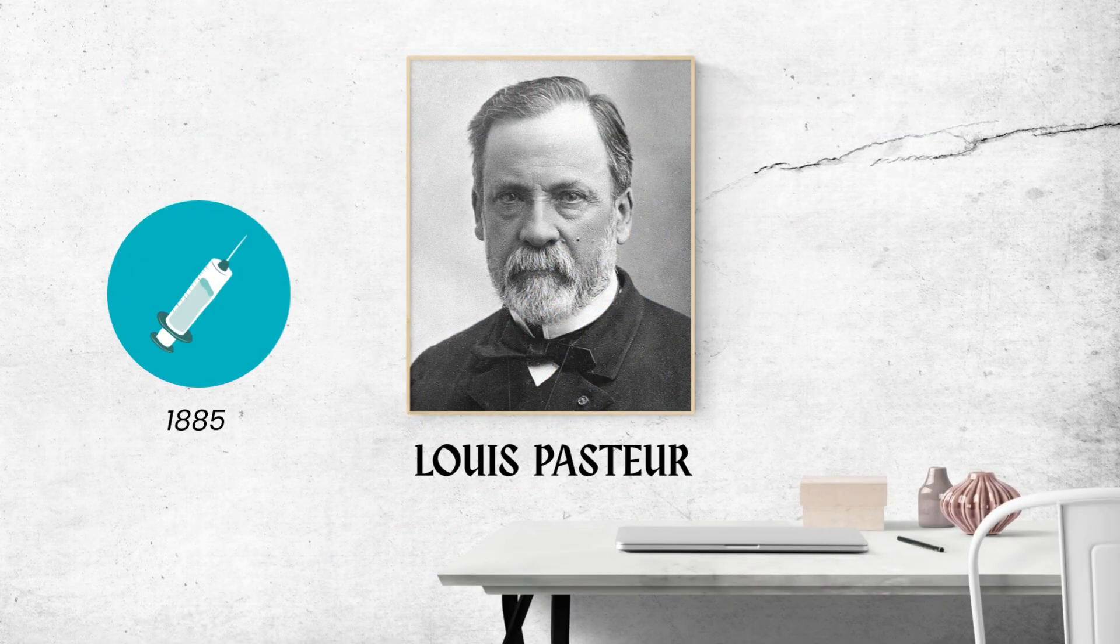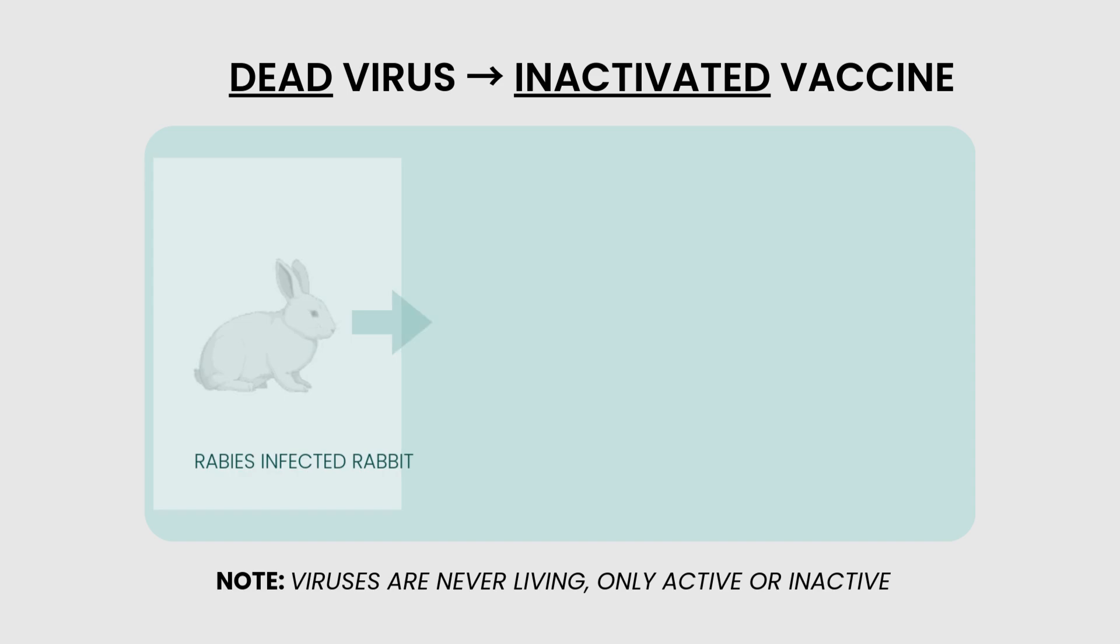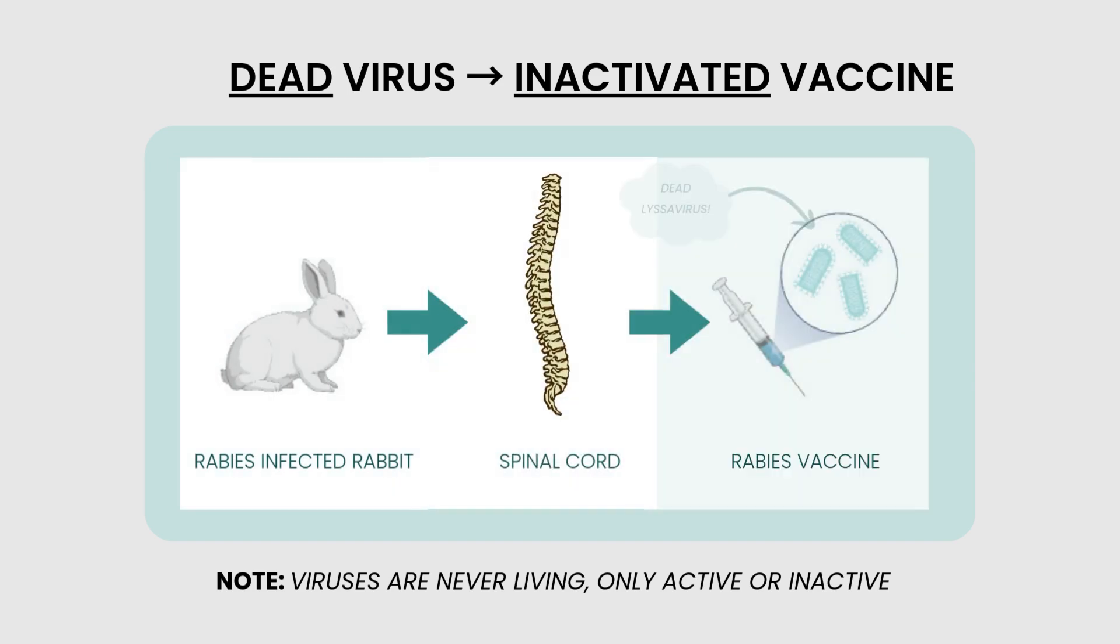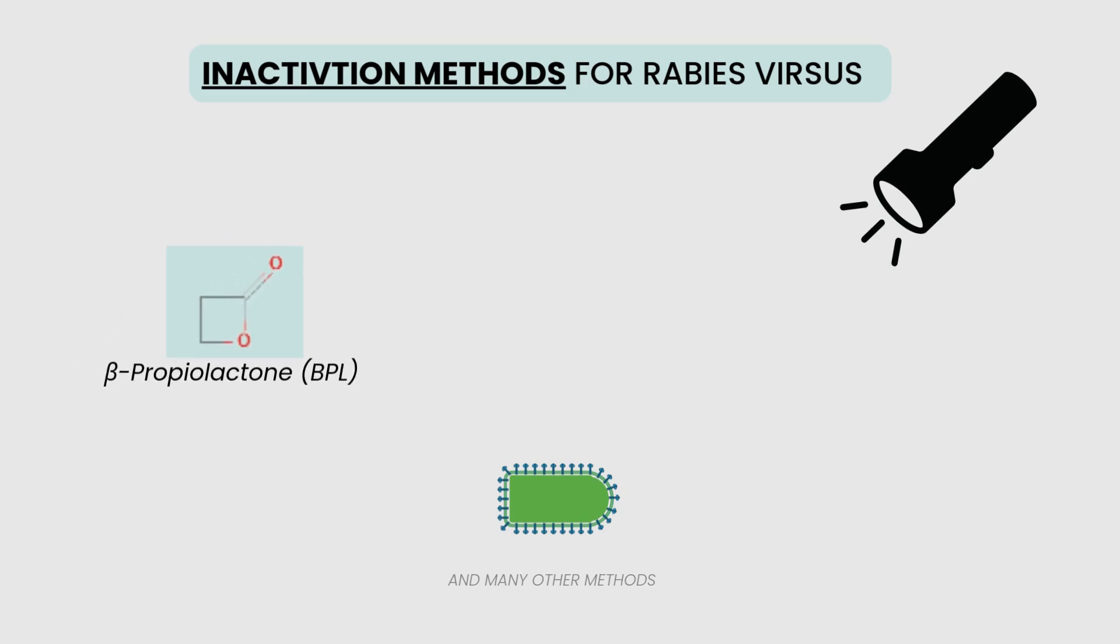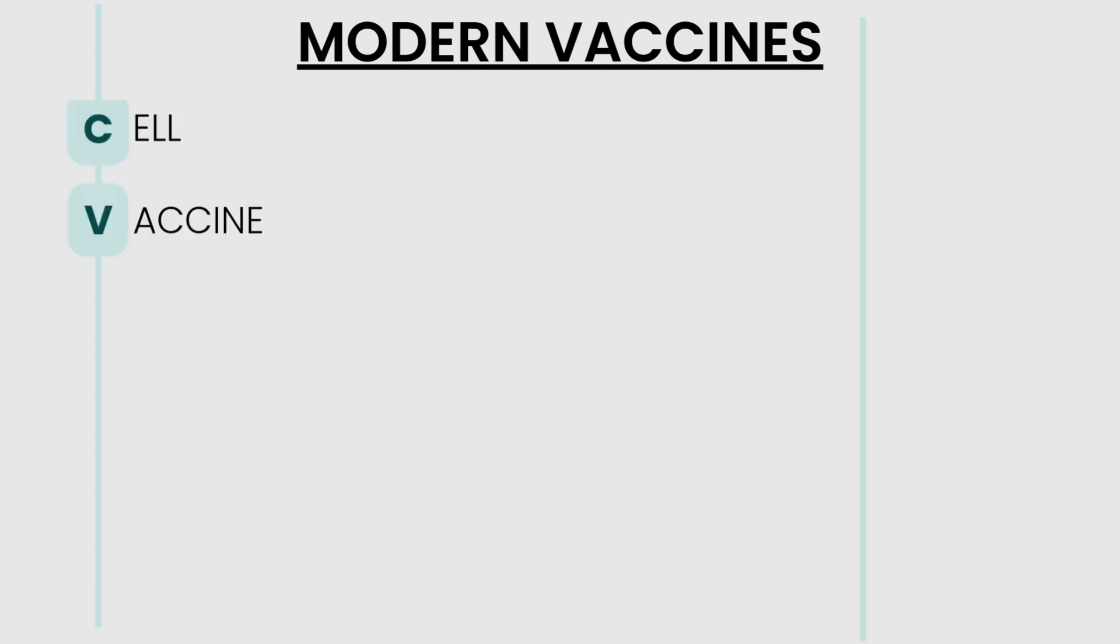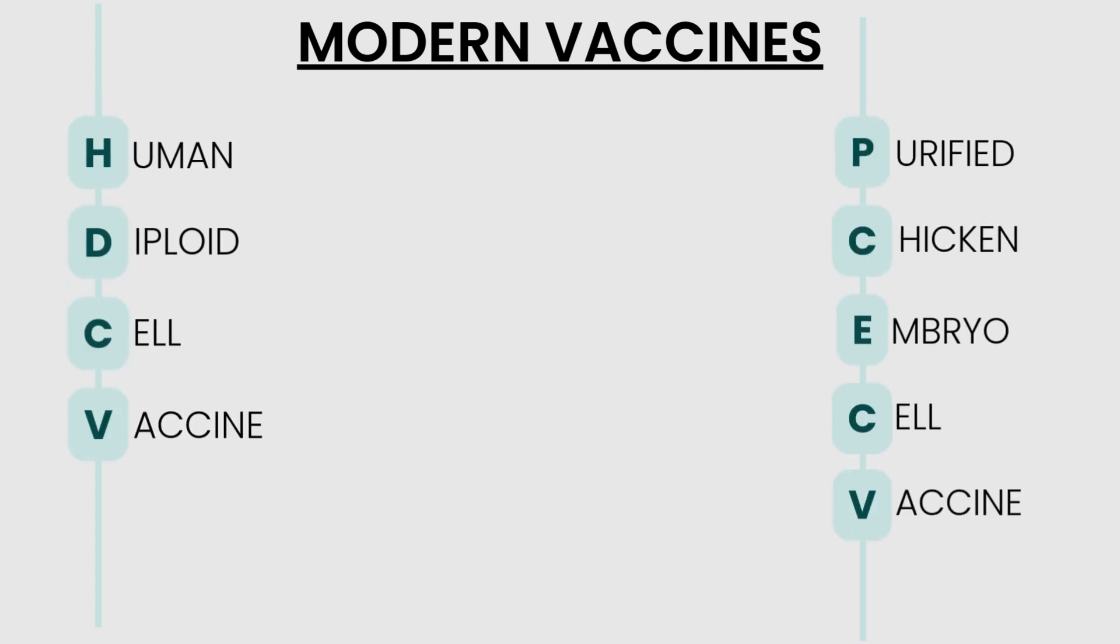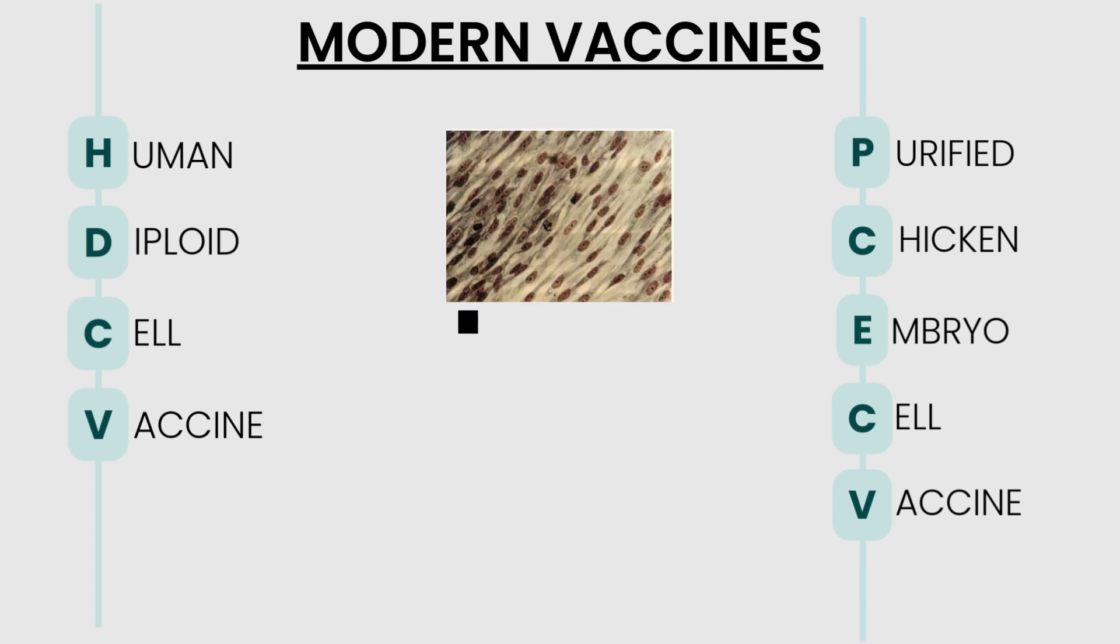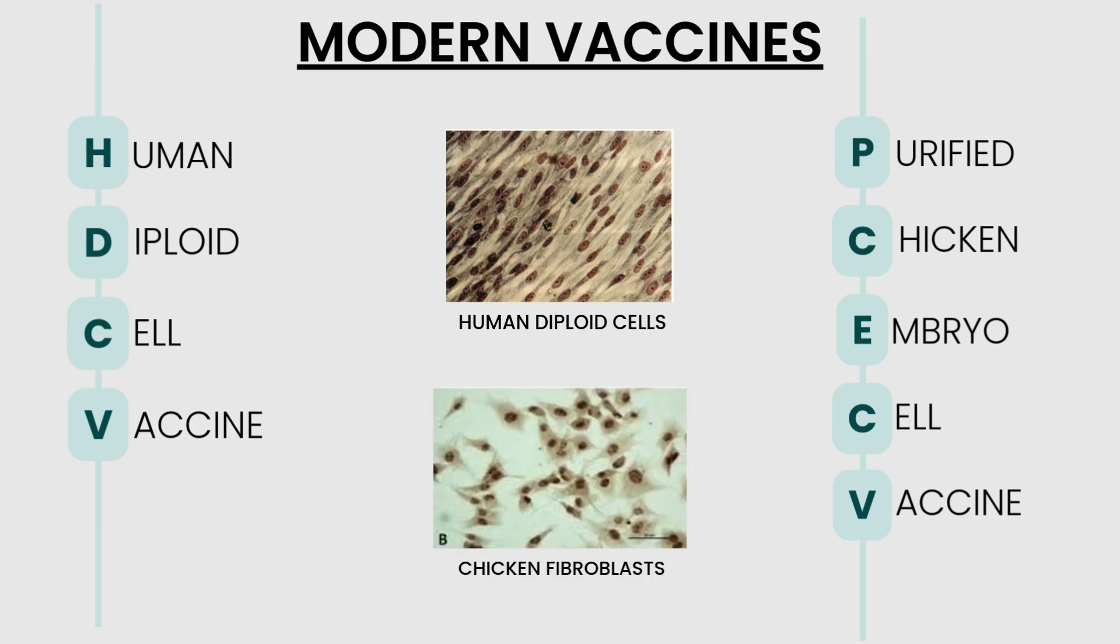We can thank Louis Pasteur for the first rabies vaccine in 1885. His inactivated vaccine was created by drying out rabies-infected spinal cord, which rendered the rabies virus dead. Today, vaccines are made inactive through various means such as chemically using BPL or with UV light. These dead viruses can still stimulate the immune system. This inactivated vaccine is grown in either human diploid cells or purified chicken embryo cells. HDCV uses replicated virus infected human diploid cells and PCECV uses infected chick fibroblasts.